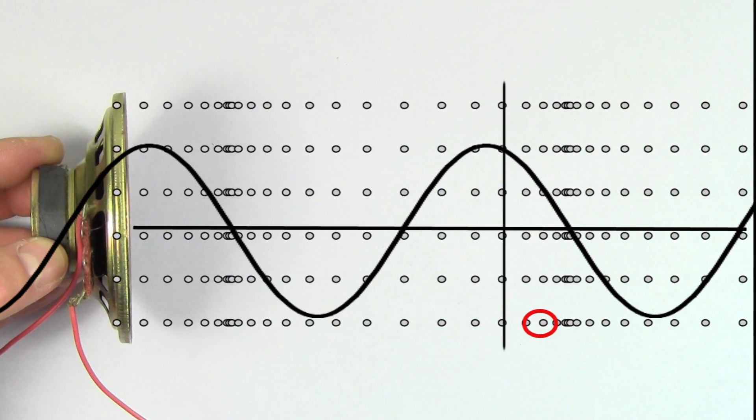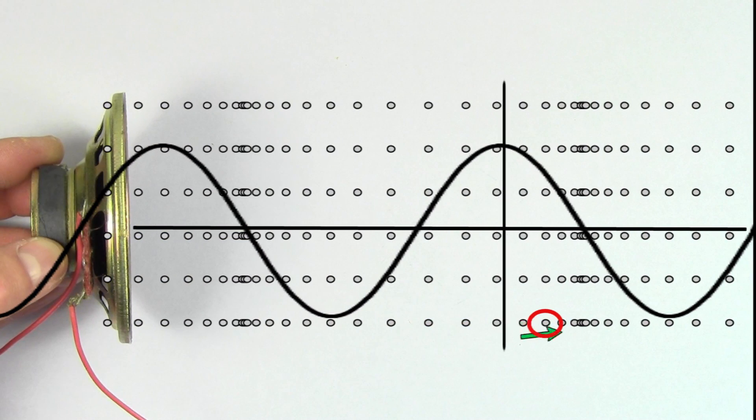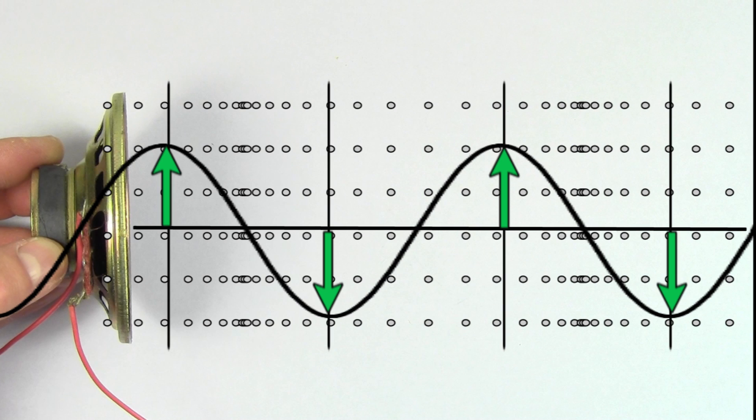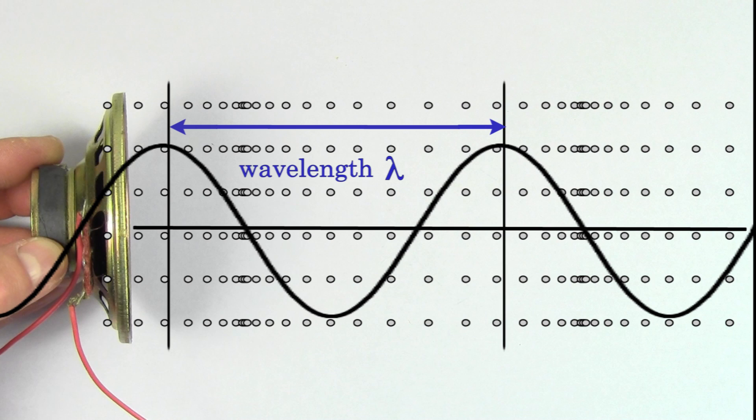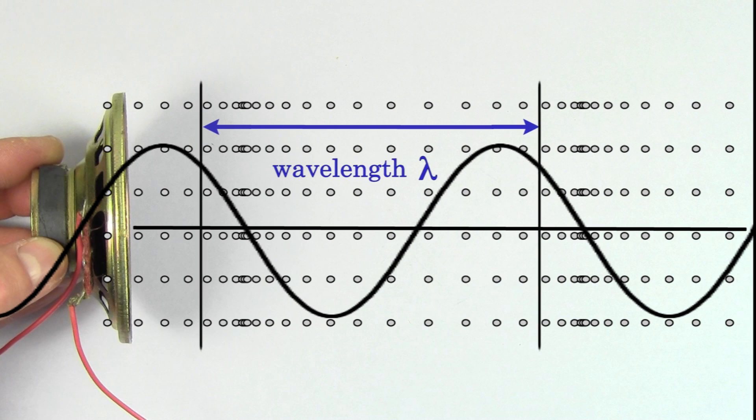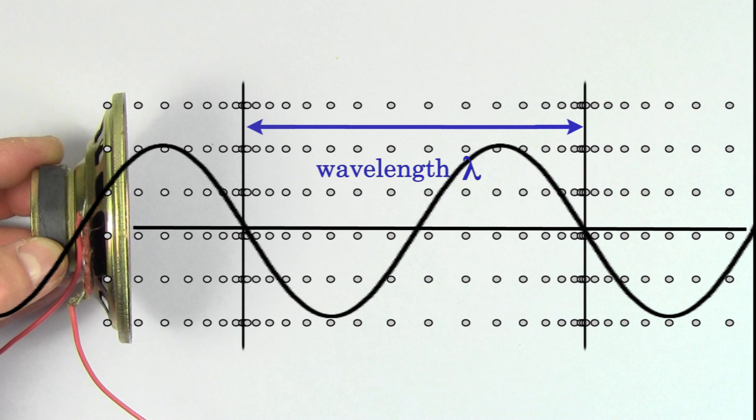This graph would let us know, for a particular moment in time, how displaced is that air molecule at that particular position in space. This graph shows us that in some regions, the air is displaced a lot from its equilibrium position. And in other regions, the air is not displaced much at all from its equilibrium position. For this kind of graph, the distance between peaks represents the wavelength of the sound wave, not the period. Because it would be measuring the distance between compressed regions in space.